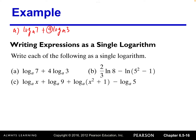The four in front is a coefficient, so it can go as a power. So that's log base a of seven plus log base a of three to the fourth power. The sum of two logs with the same base a can be written as a single log — log base a of seven times three raised to the fourth power.